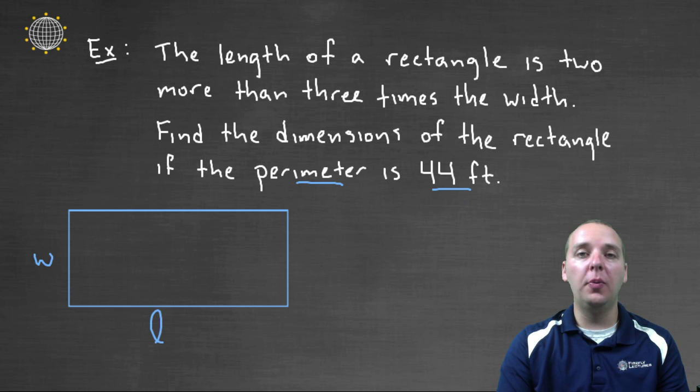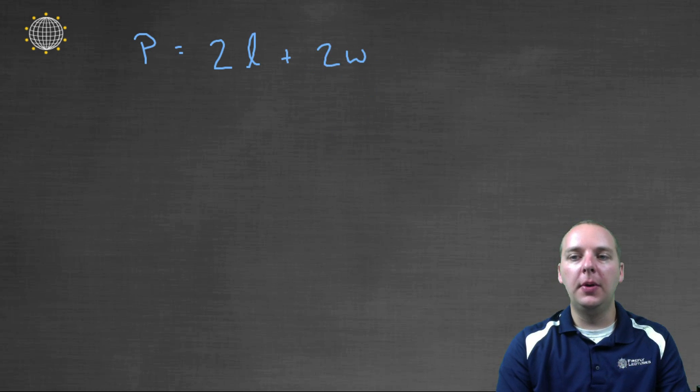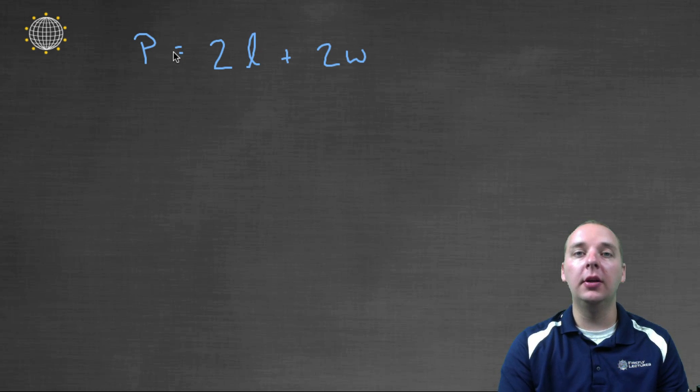So I know a formula for perimeters, well I guess we'll start there. I know that the perimeter of a rectangle is two L plus two W, right, two L plus two W. But that's got too many variables in it. To solve this, I need to reduce these three variables down to just a single variable.